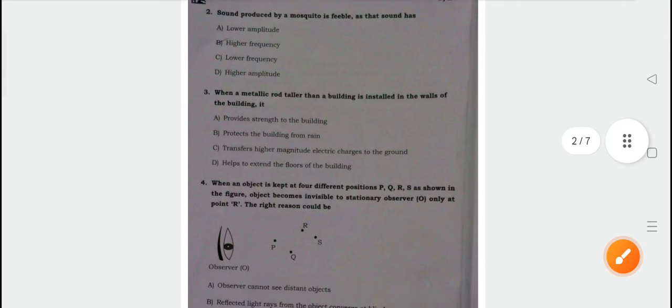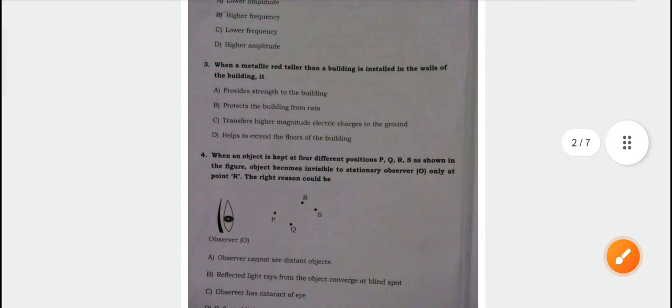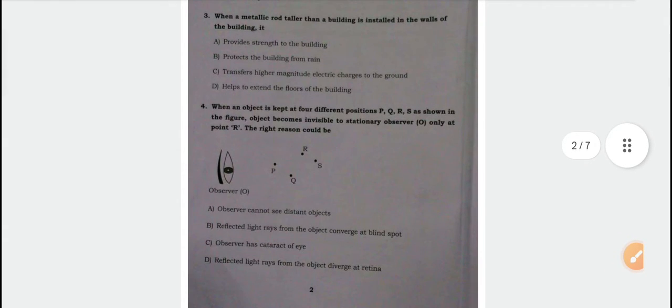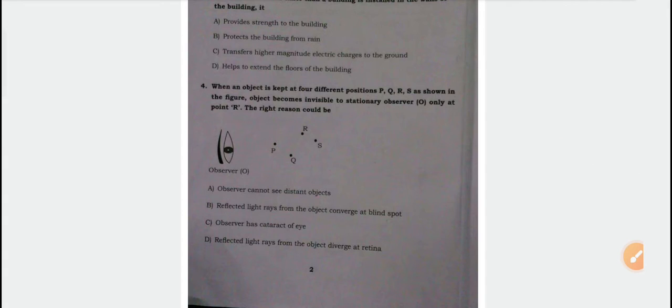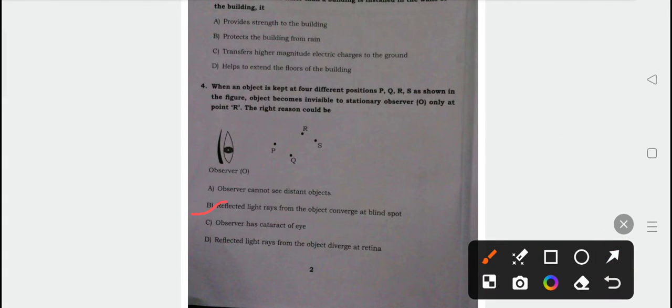Next, fourth question. When an object is kept at four different positions P, Q, or R as shown in the figure, object becomes invisible to stationary observer O only at point R. The right reason could be the correct answer. For this question, option B, reflected rays from the object converge at blind spot.